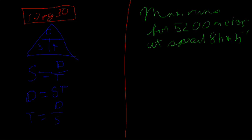So what else are we trying to find? Find distance. Find D. We know that D equals ST. So D equals S times T, and S is 8 kilometers an hour. The speed is 5200 meters. But wait, we can't. Our formula will not be right if we put that in.